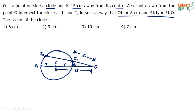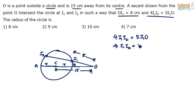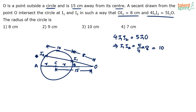Consider the equation: 4×I1I2 = 5×I1O. Since I1O equals 8, we get I1I2 = (5/4) × 8 = 10. So OI1 is 8 centimeters and I1I2 is 10 centimeters.